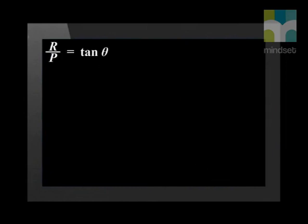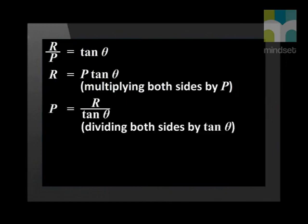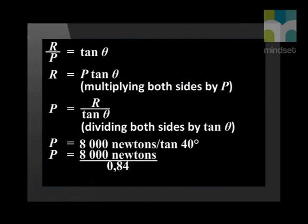As before, the ratio of vector R over vector P is the tan of angle theta. We can multiply both sides of the equation by P because when we do that, the sides remain equal. So we get R equals P tan theta. Now divide both sides by tan theta, and we get P equals R over tan theta. Put in the value of R, which we know is 8000 newtons. Put in the size of theta, which we know is 40 degrees. Use your calculator to find the tan of 40 degrees. Now divide 8000 by that number,